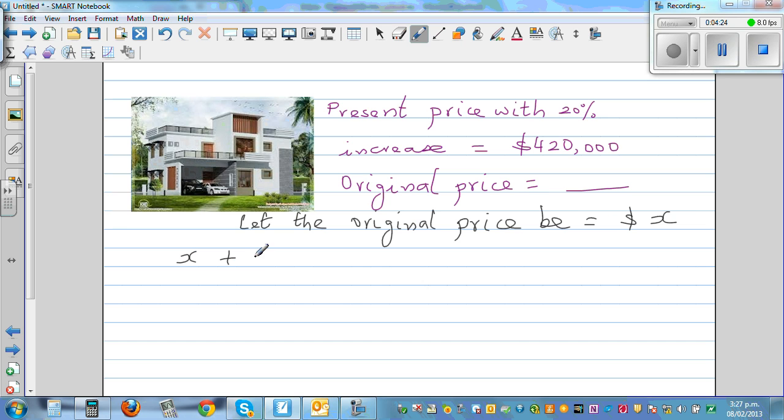So this I can say, this is X plus 20% of X is equal to 420,000. So that is X plus 20% as the decimal is 0.2 times X is equal to 420,000. So this is X plus 0.2X is equal to 420. And this is 1X plus 0.2X is 1.2X is 420.